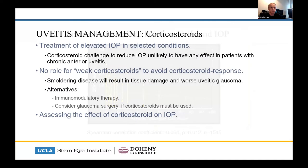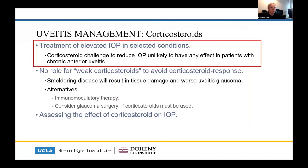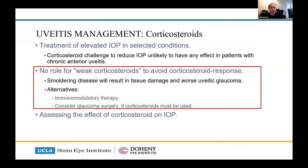A corticosteroid challenge to reduce IOP isn't going to do anything in someone with chronic anterior uveitis — forget that. Steroids can help in certain acute conditions. There's no real role for weak steroids to avoid a corticosteroid response — weak steroids are useful as maintenance in well-controlled patients, but don't allow smoldering disease, as that will give you tissue damage and worse uveitic glaucoma.